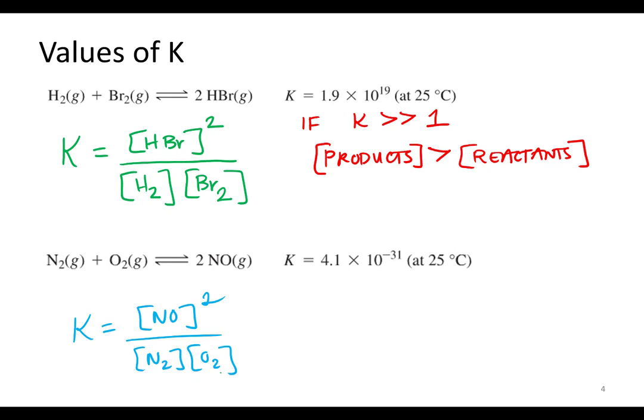It turns out that the equilibrium constant for this equilibrium system happens to be 4.1×10⁻³¹ at 25°C. Is that a big number or a small number? That's a small number. So 10⁻³¹ — that's really small, smaller than the scale of atoms. Atoms are around 10⁻¹² meters, so 10⁻³¹ is incredibly small.